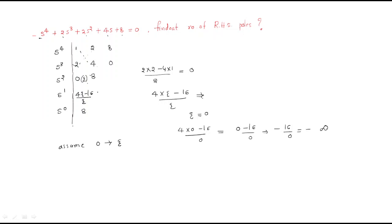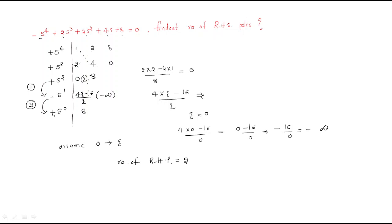The first column signs are: positive, positive, positive, negative, positive. No sign change here, but there is a sign change from positive to negative and from negative to positive. Therefore, the number of right-hand side poles is 2. This is the method: wherever you get a zero in the first column, replace it with zeta, do the calculation, then substitute zeta = 0.